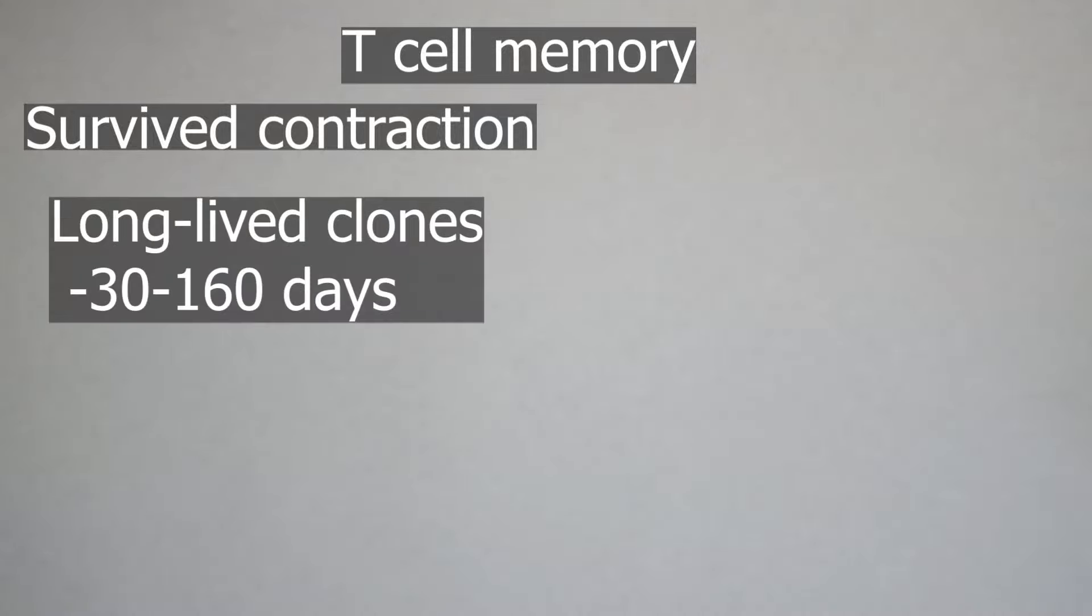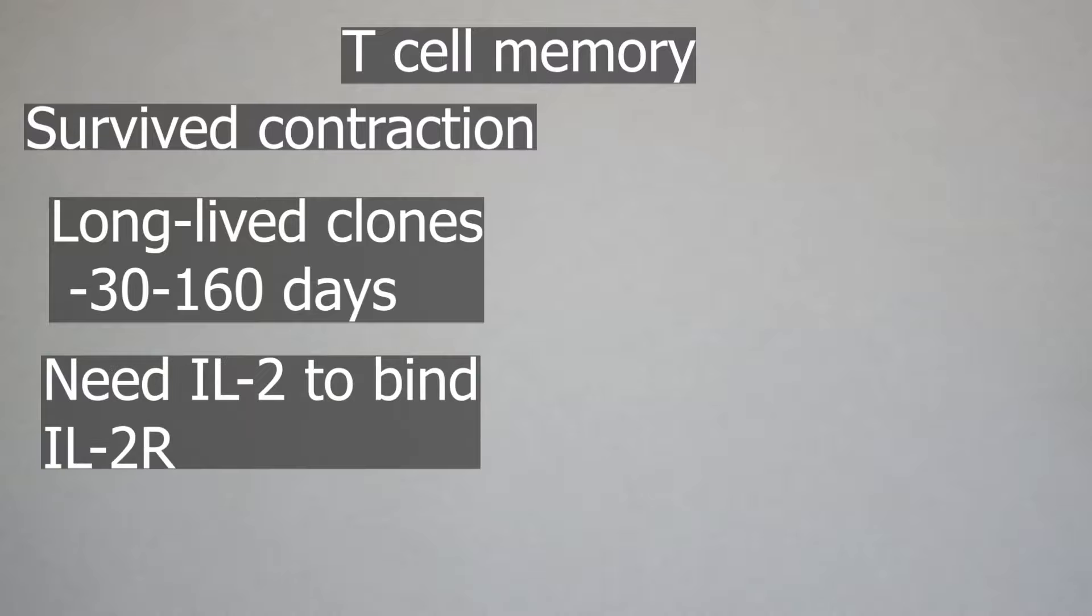So here's the wrap up for T cell memory. They're basically the T cells that survived contraction after an antigen was discovered. They are long-lived clones. They can live between 30 and 160 days. So the T cell receptor is basically preserved. So even though each T cell might only live for a couple of months, they've made copies of themselves that live for a couple of months. And this can continue for your entire lifetime, as long as there's enough IL-2. So I showed you before the cytokine IL-2 binding to the IL-2 receptor. And that basically allows it to sort of make infinite clones.